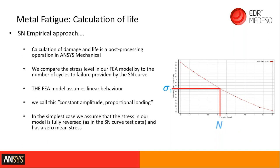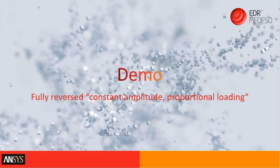Calculating time to crack initiation is empirical: we run an FE analysis, look at the stress level, assume in the simplest form we are fully cycling that stress value, and compare it to the SN curve to obtain the number of cycles to failure. In its simplest form the FE model is assumed to be fully reversed about a zero mean — we call this constant amplitude proportional loading — and linear behavior is assumed. Let's start with a demo of constant amplitude proportional loading.